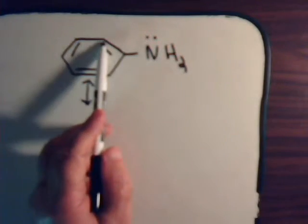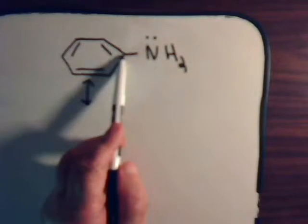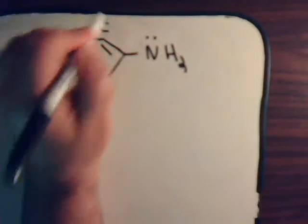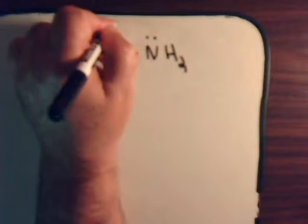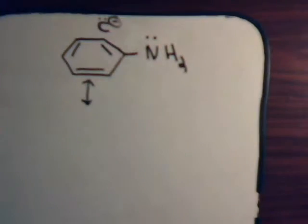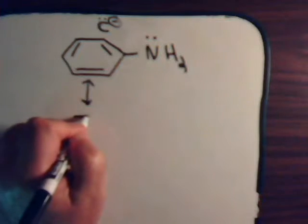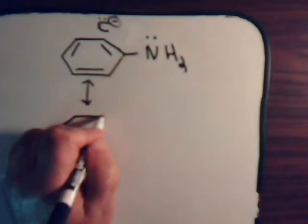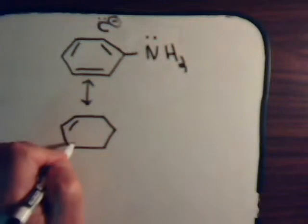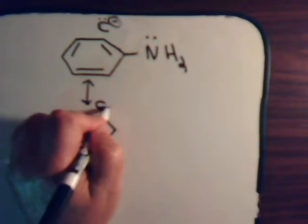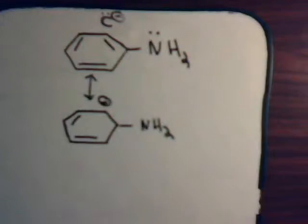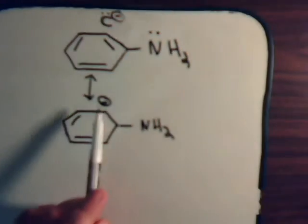Now we imagine this carbon swipes the pi electron from this one, and in so doing it will then have a lone electron pair of pi electrons and it will have a negative charge. So the canonical structure would be like this.